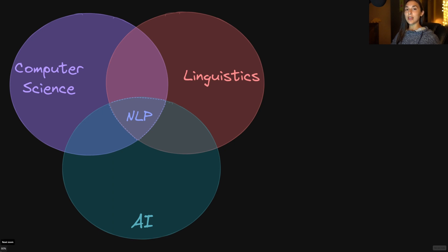Before we jump into the course details, let's get a quick introduction to the field of natural language processing. It's at the intersection of the fields of computer science, linguistics, and artificial intelligence where our field of NLP resides. The core focus of this field is on human-machine interaction — think machine translation, text-to-speech, or even automated chatbots. These would all fall under the field of natural language processing.